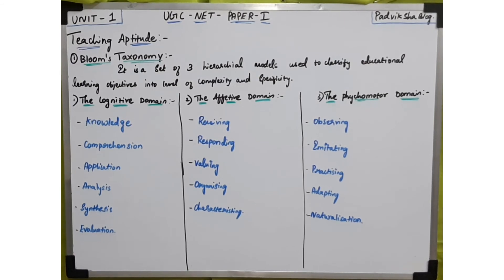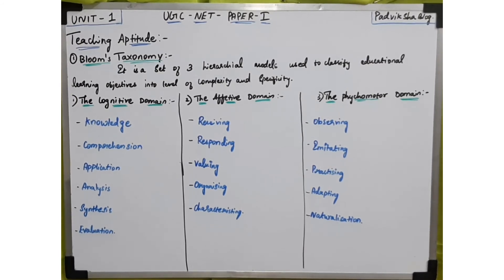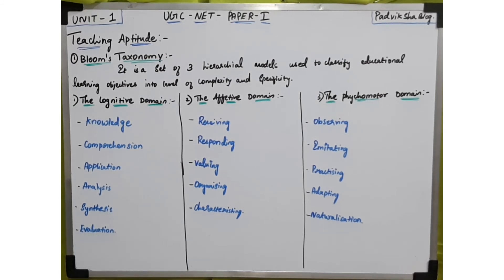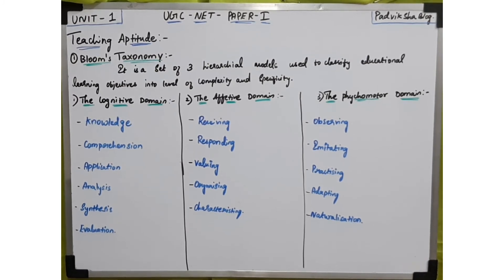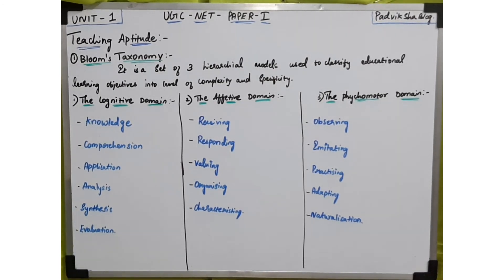The next level is adapting — it involves fine tuning and making minor adjustments in a physical activity in order to perfect it. For example, in teamwork, we need to work together, and sometimes we need to make minor changes. We need to accept and adapt to the team. That physical process of adjustment is adapting.